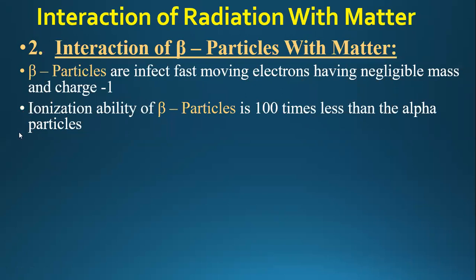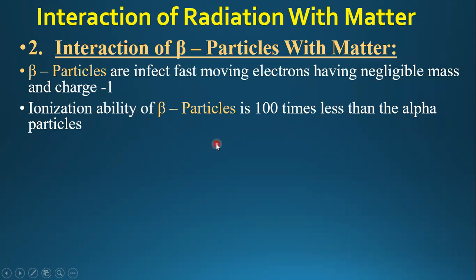Beta particles produce about one hundred times less ionization compared to alpha particles. The reason is that beta particles have a low charge of minus one compared to plus two for alpha particles, and their mass is much smaller — alpha particles are 7000 times more massive. Because of this smaller mass, direct collision ionization is less effective.